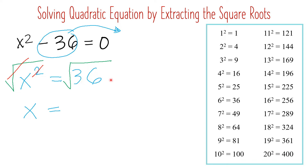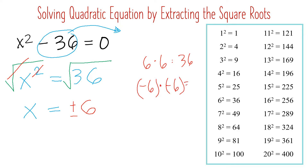Now get the square root of 36. Looking at our list, 36 is here, and it comes from 6 times 6, so the square root of 36 is 6. It's actually not only positive 6 — it will be positive and negative 6, because 6 times 6 is 36, and negative 6 times negative 6 is also 36. So both positive and negative 6 are the roots of this quadratic equation.